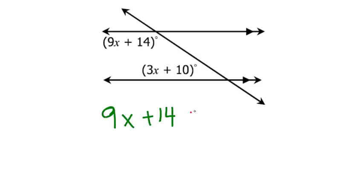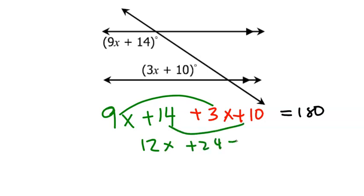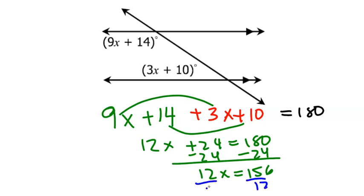So we're going to set these up as a single addition problem. 9x plus 14 plus 3x plus 10 is equal to 180 degrees. When I combine like terms that are on the same side, I get 12x plus 24 equals 180. When I subtract 180 minus 24, I get 12x equals 156. And when I divide both sides by 12, I get x is equal to 13.